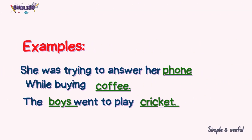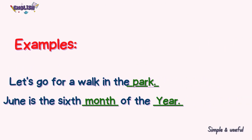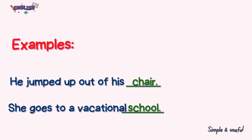'She was trying to answer her phone while buying coffee.' Phone and coffee are both nouns. 'The boys went to play cricket.' Boys and cricket are nouns. 'Let's go for a walk in the park.' Park is the noun. 'June is the sixth month of the year.' Month and year are both nouns. 'He jumped up out of his chair.' Chair is the noun. 'She goes to a vocational school.' School is the noun.